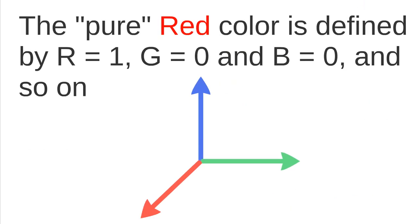The basic idea is that, for example, the pure red color is defined by assuming that in this Cartesian system we have R equal to 1, G equal to 0, and B equal to 0, and so on. In this case, we will create this point here.